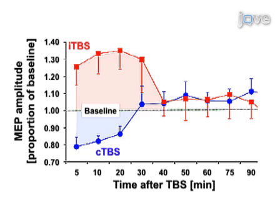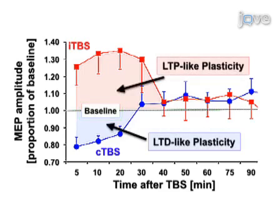There are no differences in the effects of theta burst stimulation on corticospinal excitability in subjects with neurodevelopmental disorders, as measured through the variation between baseline and post-stimulation excitability.